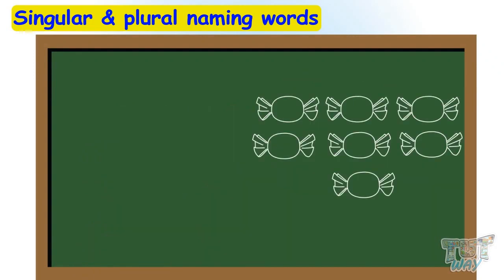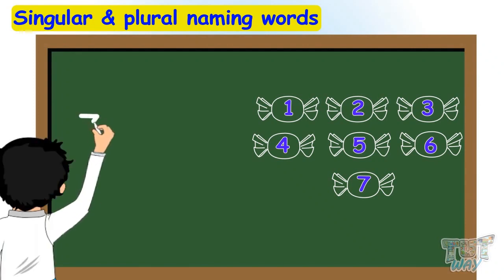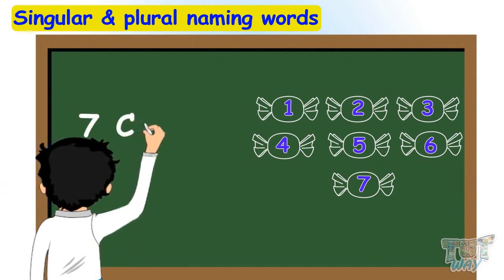Here we have some candies drawn on the board. Now count these candies: 1, 2, 3, 4, 5, 6, 7. Now write how many candies are there.